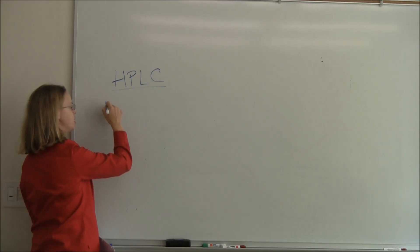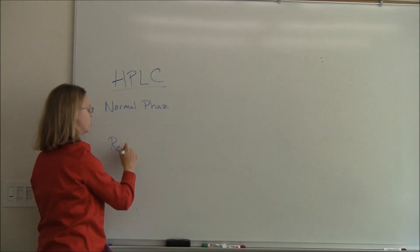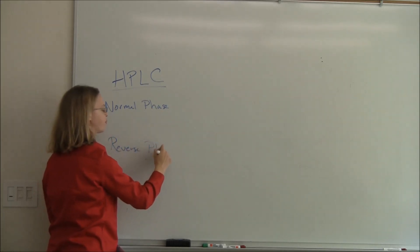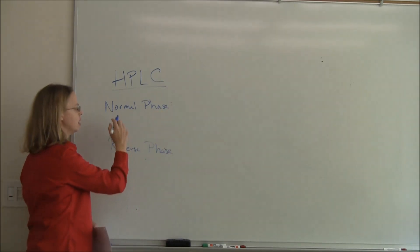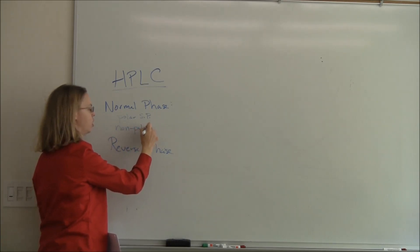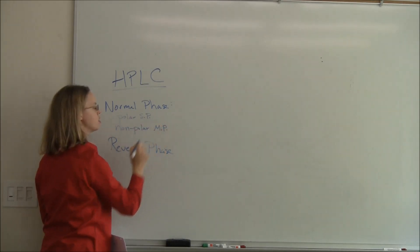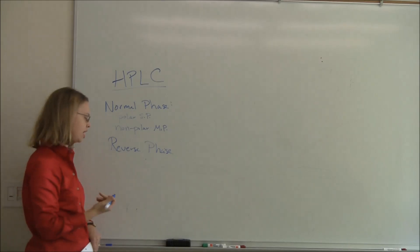There's two types of HPLC. One is called normal phase, and the other one is called reverse phase. Normal phase LC uses a polar stationary phase and a non-polar mobile phase. So that means whatever I have on my column is going to be polar, and then whatever I'm going to dissolve in, it's going to be non-polar, like some sort of organic solvent.